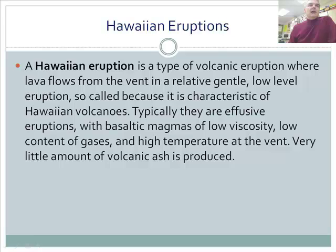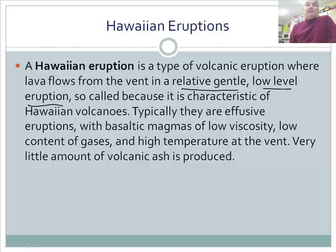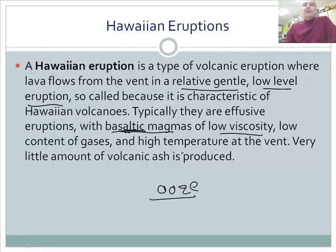Hawaiian eruptions are the type where lava flows from the vent in a relatively gentle, low-level eruption — the lowest level on the scale. These are effusive eruptions that usually produce basaltic magmas of low viscosity and low gas content at high temperatures. These are the 'ooze' volcanoes — they just ooze out. They're exciting to watch, but from an explosivity standpoint, the index is not very high.